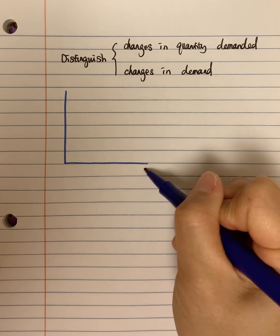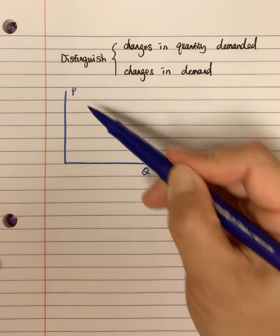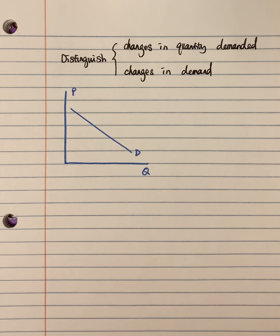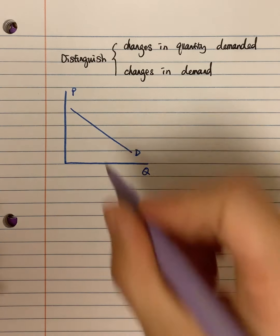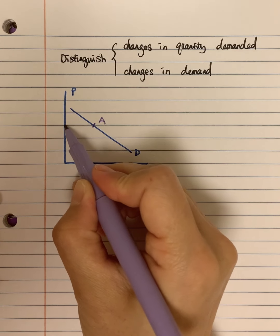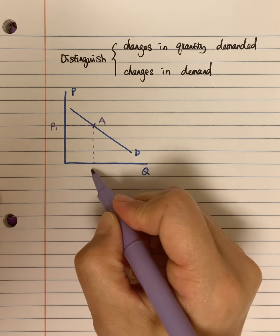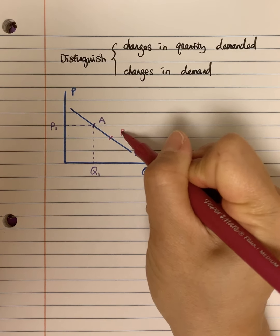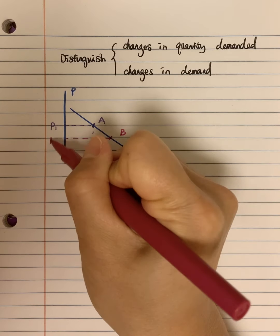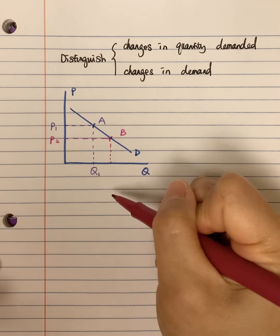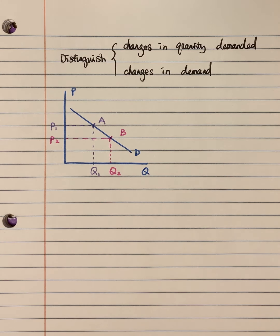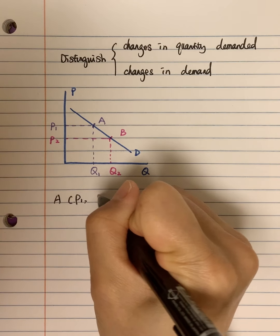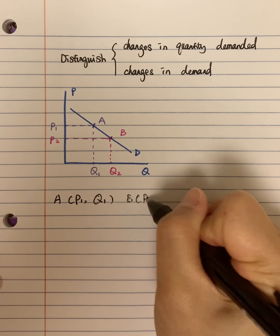Here is the graph. I put the quantity on the horizontal axis and the price on the vertical axis. The demand curve will be downward sloping. I can mark two points on this demand curve. The first point is point A — at point A, the price equals P1 and the corresponding quantity equals Q1. Then point B — at point B, the price equals P2 and the quantity corresponding to P2 equals Q2.